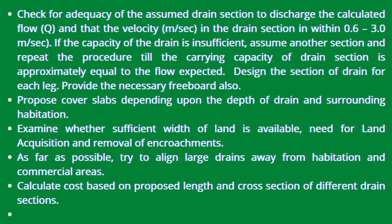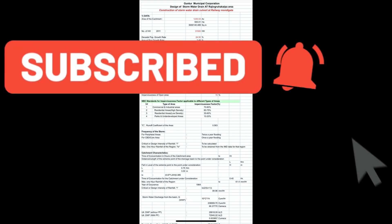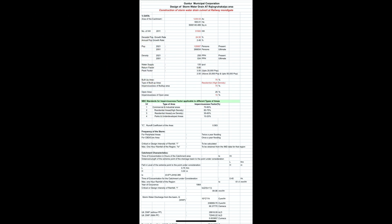Following the above procedure, a simple Excel software tool has been provided. By giving input data, it finds the discharge, including dry weather flow and wet weather flow, and calculates the velocity within the limit of 0.6 to 3 meters per second. Finally, the cross section of the drain is found by using an assumed section — checking whether that section is sufficient to discharge the stormwater, or otherwise repeating with changed dimensions. The cross sections are designed for both sullage water discharge and stormwater discharge.